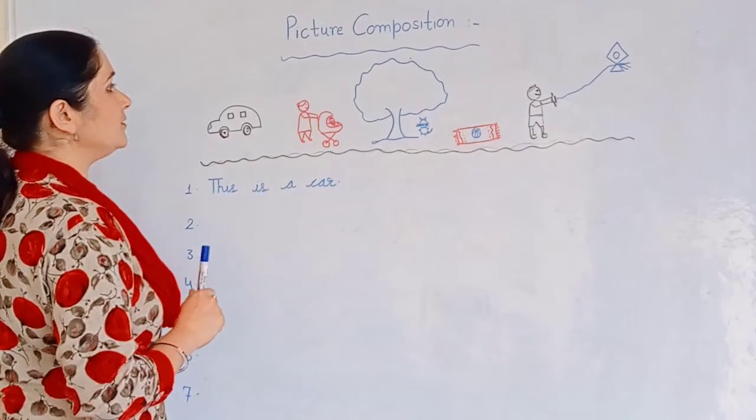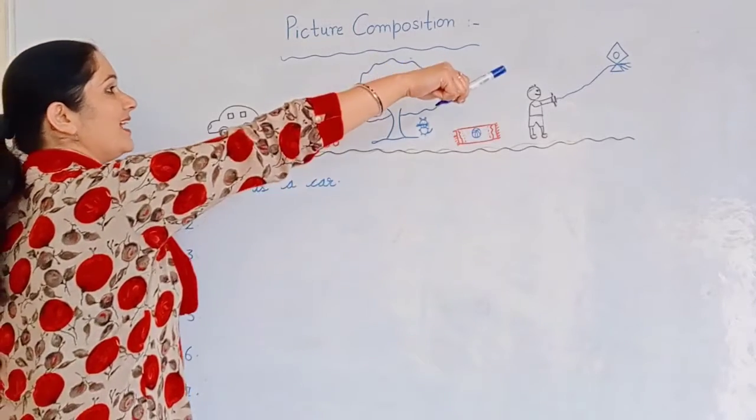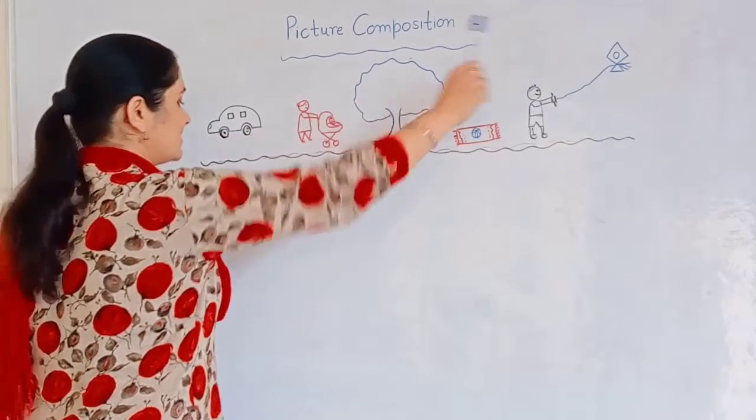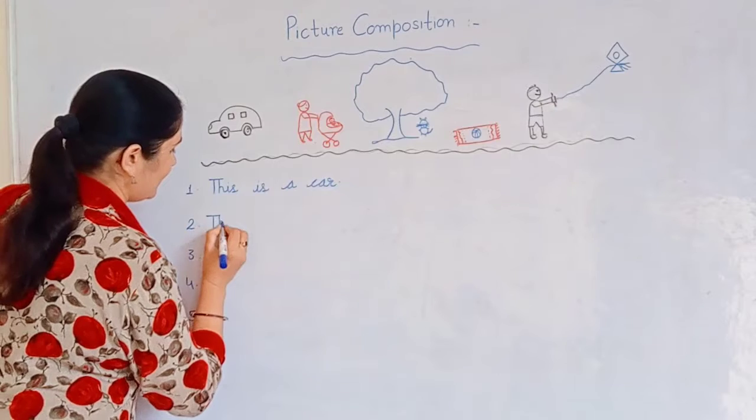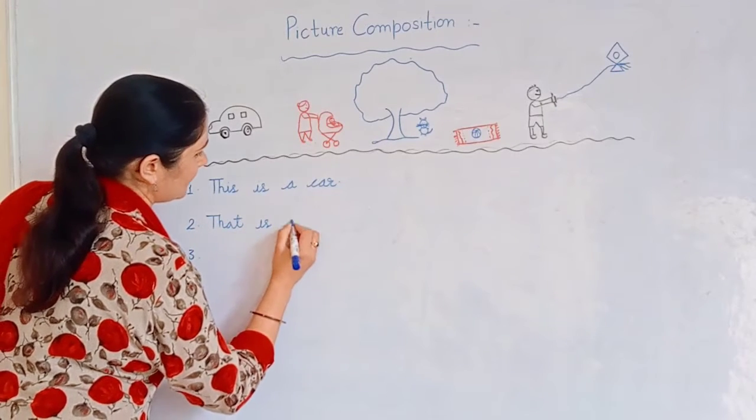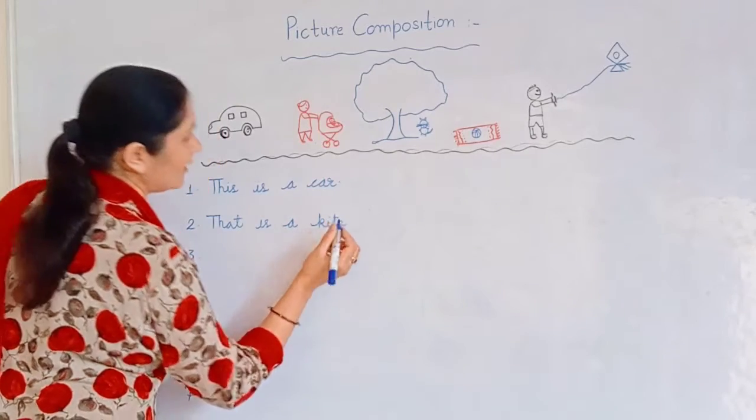Next we will use that. So far from us is the kite. Kite is far from me so I will use that. That is a kite.